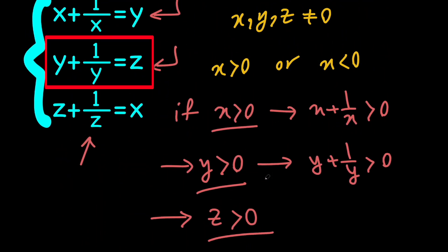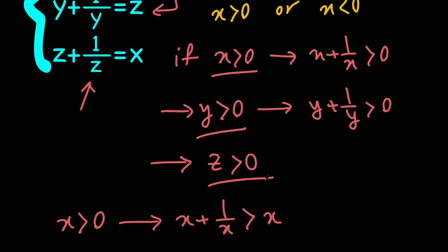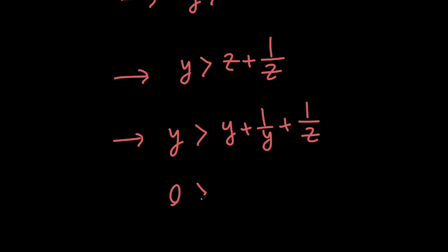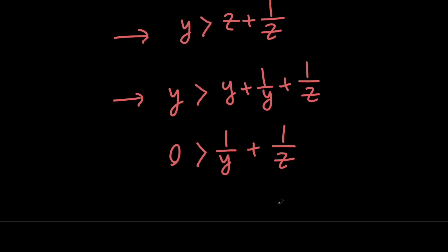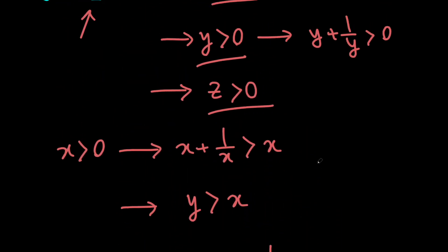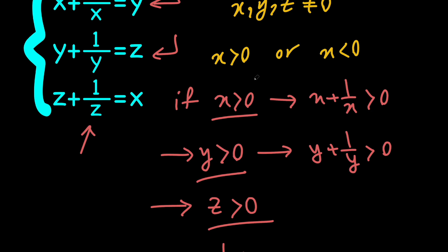Since z is y plus 1 over y, we have y is greater than y plus 1 over y plus 1 over z. Subtracting y from both sides gives 0 is greater than 1 over y plus 1 over z. But both y and z are positive, so the sum of 1 over y and 1 over z is going to be positive, not negative. So this is impossible — there is no solution whenever x is positive.